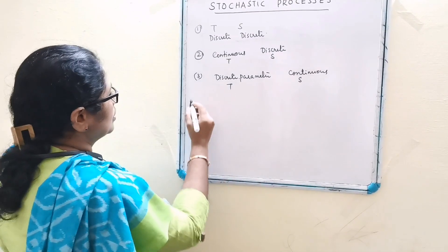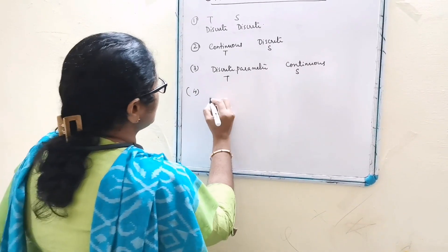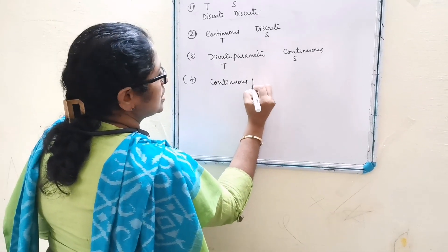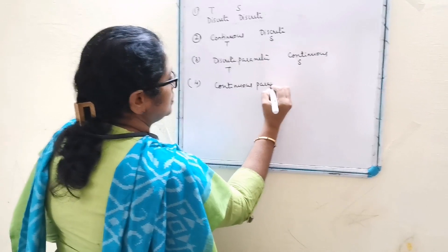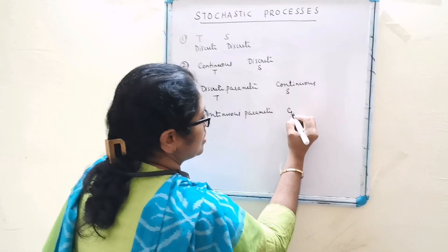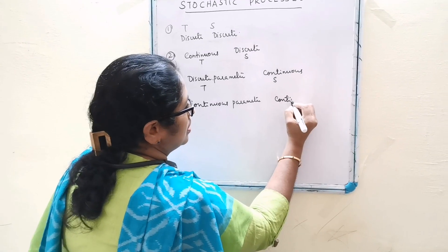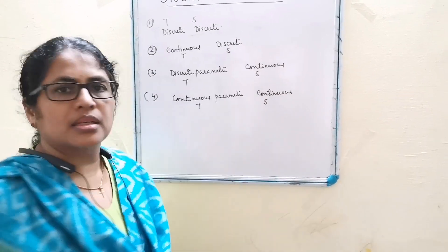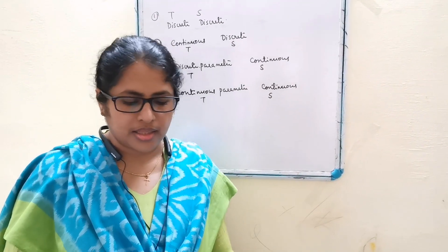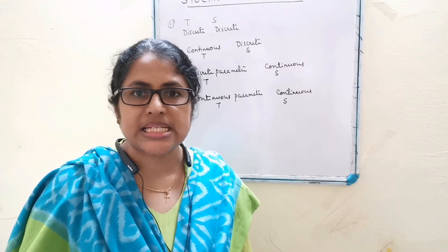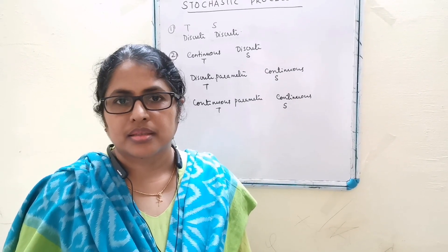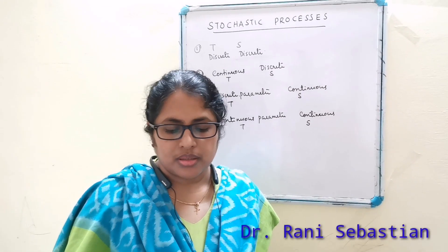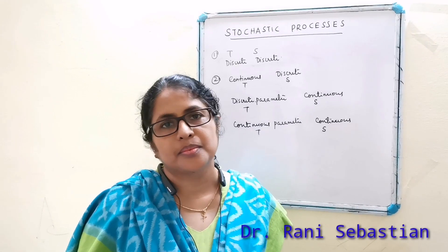The fourth and last type is continuous parameter, continuous process — here both T and S are continuous. For example, let x(t) denote the temperature of a patient at time t. Another example: let x(t) denote the speed of a motorcycle at time t.